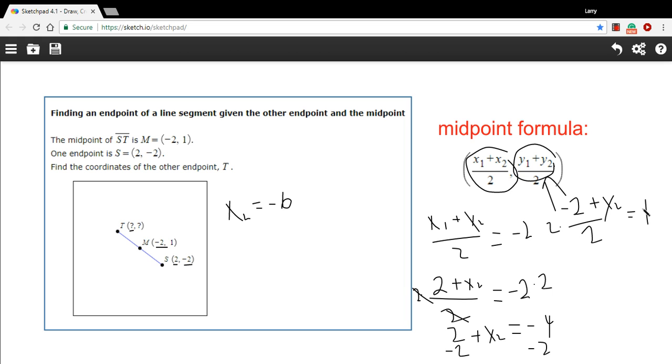Again, I'm going to multiply both sides by 2 to begin to get rid of this fraction. Here they cancel. So I get negative 2 plus y2 equals 1 times 2 is 2. And to get the y2 alone, I just have to add 2 to both sides. So I get y2 equals 4.